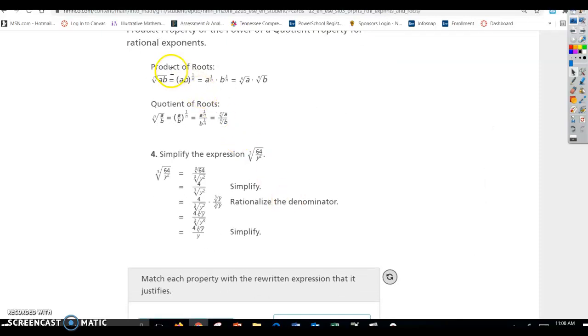Product of roots. So product just means multiply. So you have an nth root of ab. So ab is multiplied under the nth root. So what they're saying is you can rewrite that from radical form to rational exponent form. So it would be ab in parentheses raised to the 1 over n power. Remember the root becomes the denominator. And that can be written as a to the 1 over n times b to the 1 over n.